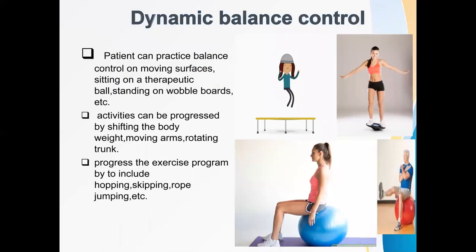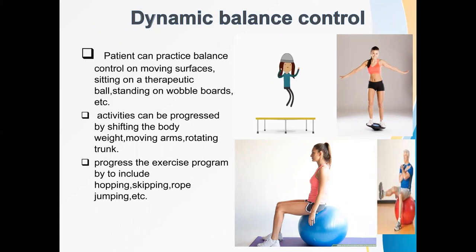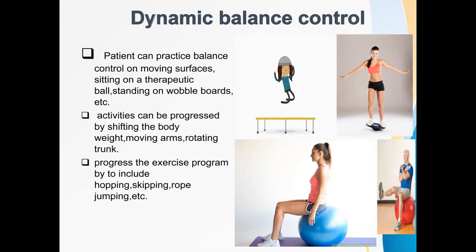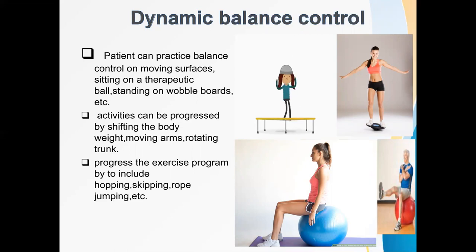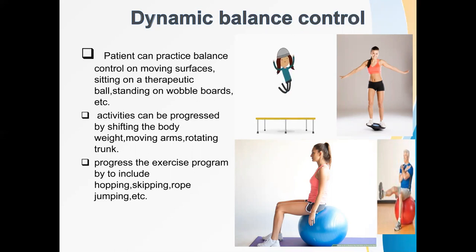Next is dynamic balance control. The patient can practice balance control on moving surfaces — such as sitting on a therapeutic ball, standing on wobble boards, or bouncing on a mini trampoline. Progression can involve shifting body weight, moving the arms, rotating the trunk, and also including hopping, skipping, rope jumping, etc.